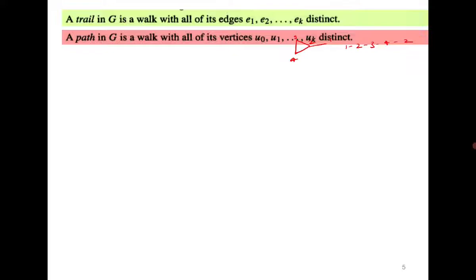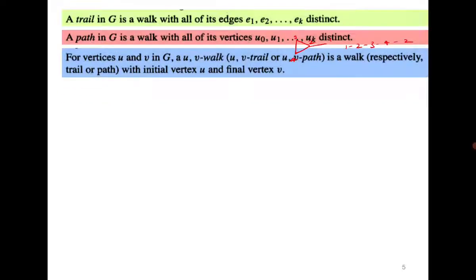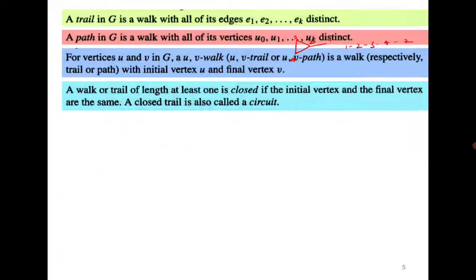A path is a walk with all vertices distinct — there is no repetition of vertices. A uv-walk is a walk with initial vertex u and final vertex v. A walk or trail is closed if the initial and final vertices are the same. A closed trail is called a circuit. So what do you think — is a circuit the same as a cycle, or different?